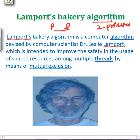He worked out this algorithm for mutual exclusion when we have multiple threads — if the number of threads is greater than two. If we only had two processes or threads, Peterson's algorithm or Dekker's algorithm would suffice. But we need something better when we have multiple threads, so that there is no race condition.